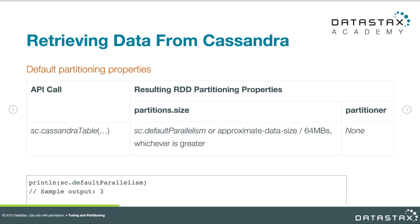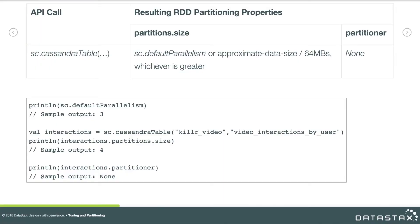When retrieving data from the Spark Cassandra connector, the situation is a little different. The connector will estimate how much data is going to come back in that RDD from the Cassandra query, divide that by 64 megabytes, and come up with some number. For example, if it estimates 256 megabytes, divided by 64 megabytes gives 4. If that's greater than default parallelism — which in this example it is — it'll use the bigger number. Otherwise it uses default parallelism. So it's whichever is greater, and again we get a partitioner of none.